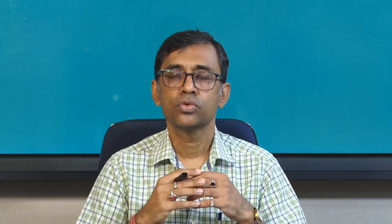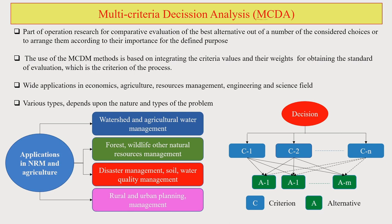Multiple criteria decision analysis, in brief MCDA, is basically a part of operational research for comparative evaluation of the best alternative out of a basket of choices. Sometimes it also helps us to arrange alternatives according to their importance for a particular purpose.